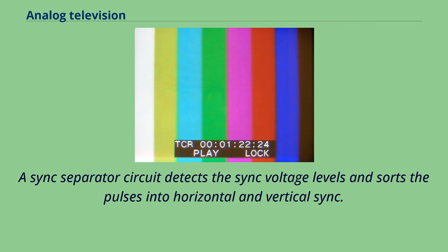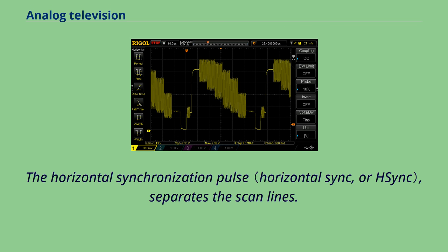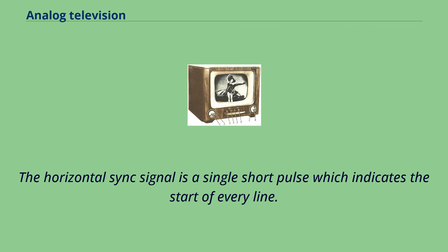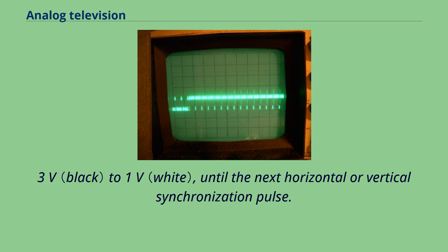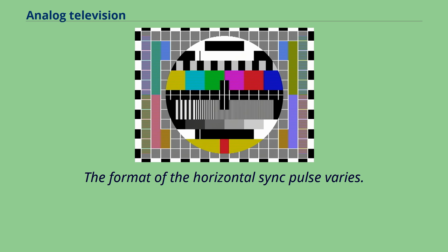The format of the horizontal sync pulse varies. In the 525 line NTSC system it is a 4.85 microsecond long pulse at 0V. In the 625 line PAL system the pulse is 4.7 microsecond synchronization pulse at 0V. This is lower than the amplitude of any video signal so it can be detected by the level sensitive sync stripper circuit of the receiver.